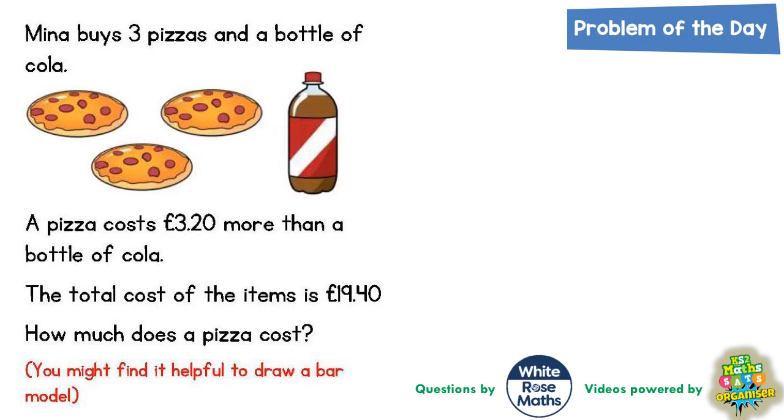Mina buys three pizzas and a bottle of cola. A pizza costs £3.20 more than a bottle of cola. The total cost of the items is £19.40. How much does a pizza cost?